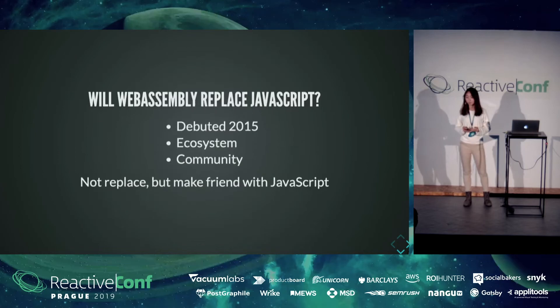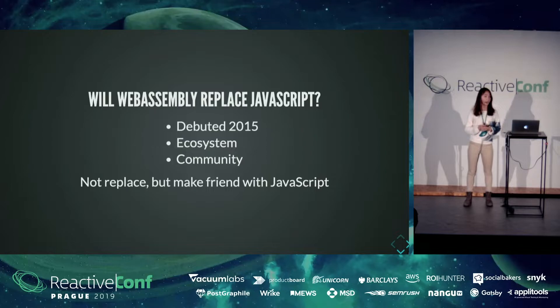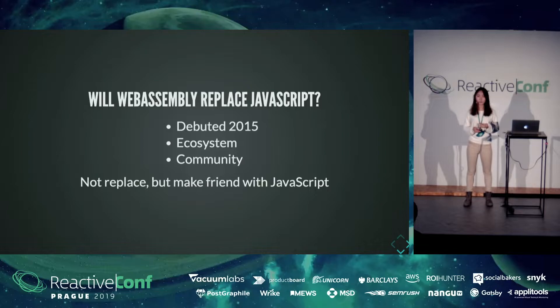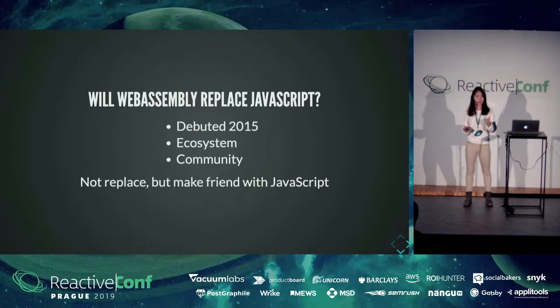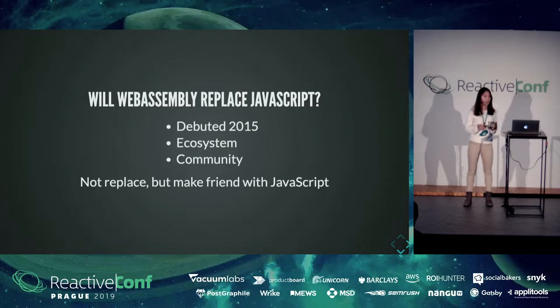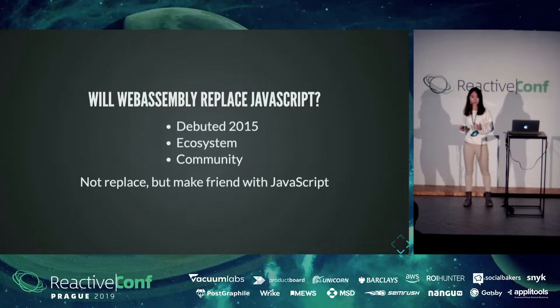So, when we talk about web languages, we usually think about JavaScript. And as a new browser language, would WebAssembly ever replace JavaScript? We need to keep in mind that a language ecosystem like libraries is as important as the language itself. WebAssembly debuted only around 2015. So, compared to the widely established JavaScript community and ecosystem, WebAssembly is still very small. At the current stage, instead of replacing JavaScript, it is something that would work very well together with JavaScript on the browser.